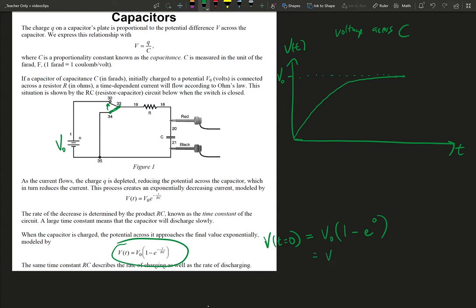So we get V0 times 1 minus 1, which is the same as V0 times 0, which is 0.